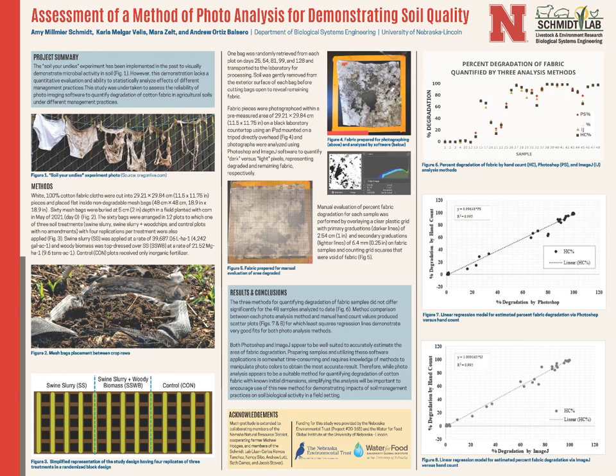Maybe not as much for just demonstrating degradation of carbon in soil for a producer, but for measuring degradation under different conditions. In our case, we've gone on and used this to look at rate of degradation and total carbon degradation with manure application and with manure plus wood chips applied. We're getting ready to put these fabric squares in plots that are in cover crops and no-till. We see it as an effective way to actually quantify total degradation and rate of degradation of a cotton fabric in soil that's under different treatments.